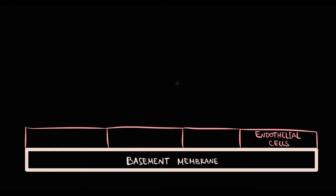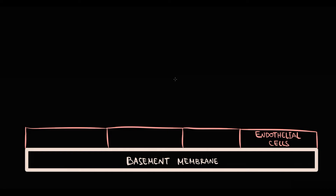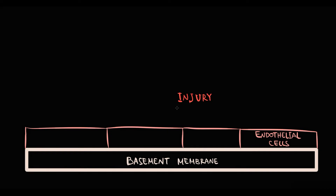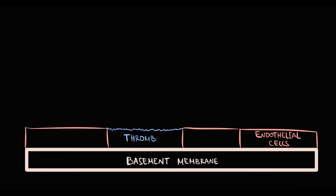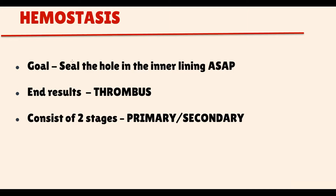There is a blood vessel, and the inner lining of the blood vessel is composed of endothelial cells located on a basement membrane. If damage to endothelial cells occurs and the inner lining becomes disrupted, the organism has to immediately cover and repair the damaged area. The specific mechanism that helps repair damage to the blood vessel wall is called hemostasis. The major principle of hemostasis is to seal the hole in the inner lining as fast as possible, and our clotting system forms a thrombus for this purpose.